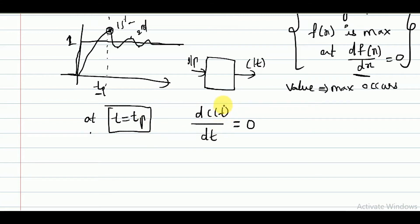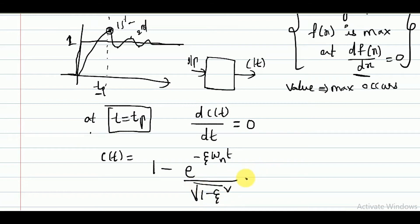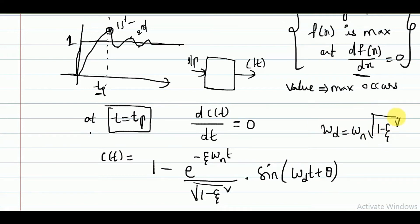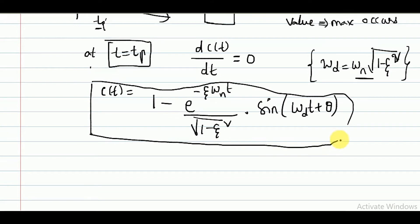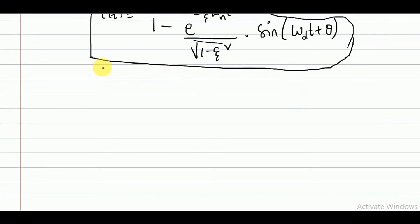We know that c(t) = 1 − e^(−ζω_n t) / √(1−ζ²) · sin(ω_d t + θ), where ω_d = ω_n √(1−ζ²). I already derived this expression in the previous video — you can refer to that if needed. Now we proceed from this point.